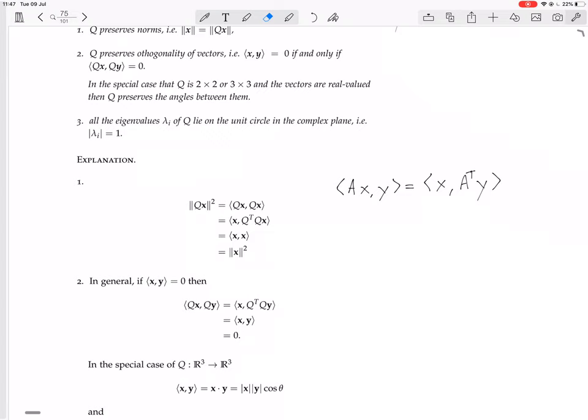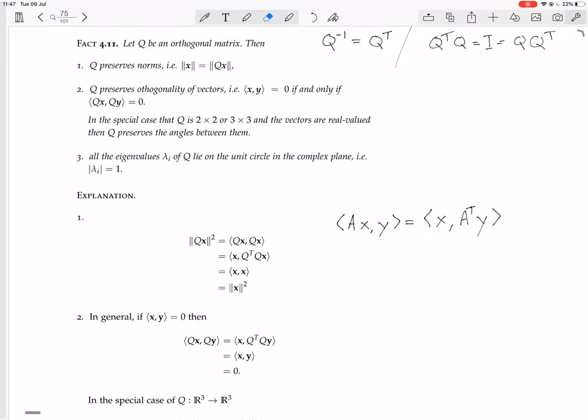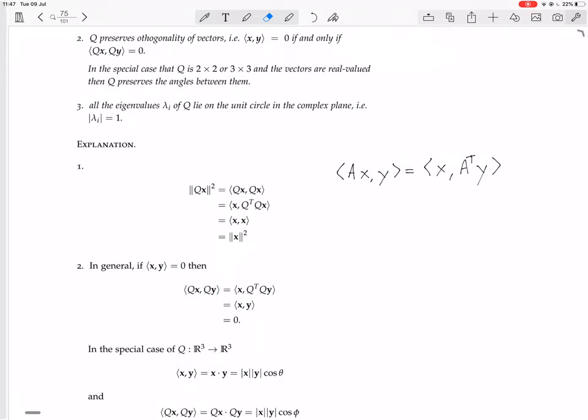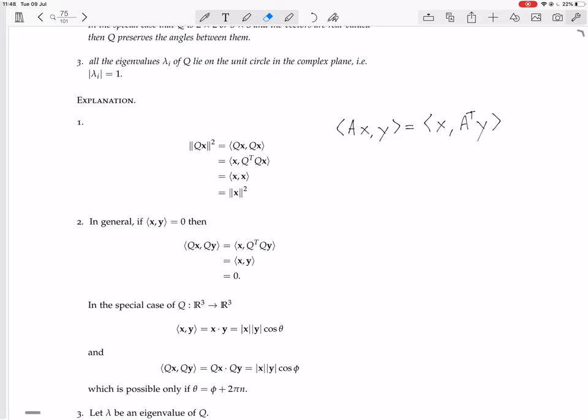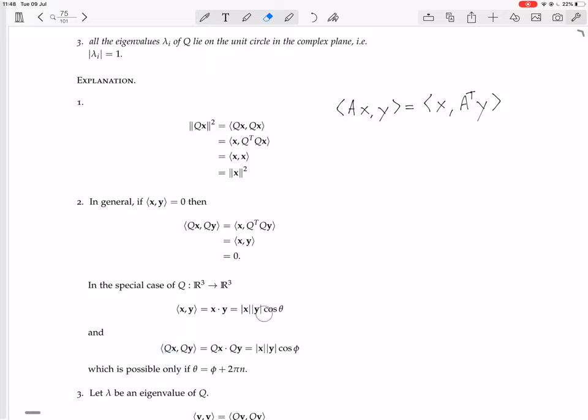So basically this is saying that if this inner product of Qx and Qy can be thought of as giving the angle, or as giving something related to the angle between the vectors, which it can be because you think of it in R3 as the inner product of X and Y gives you the magnitude of X times the magnitude of Y times cos theta, it depends purely on the sizes of X and Y and the angle between them, then the point is that Qx, Qy is equal to XY. That's what they're saying here in the special case where we can think of this as the angle. These things are equal to each other, so these things are equal to each other, so theta is equal to phi. Well, theta is equal to phi up to an argument of 2 pi n, because angles are always ambiguous up to an argument of 2 pi n, because you can go around multiple times in any direction.